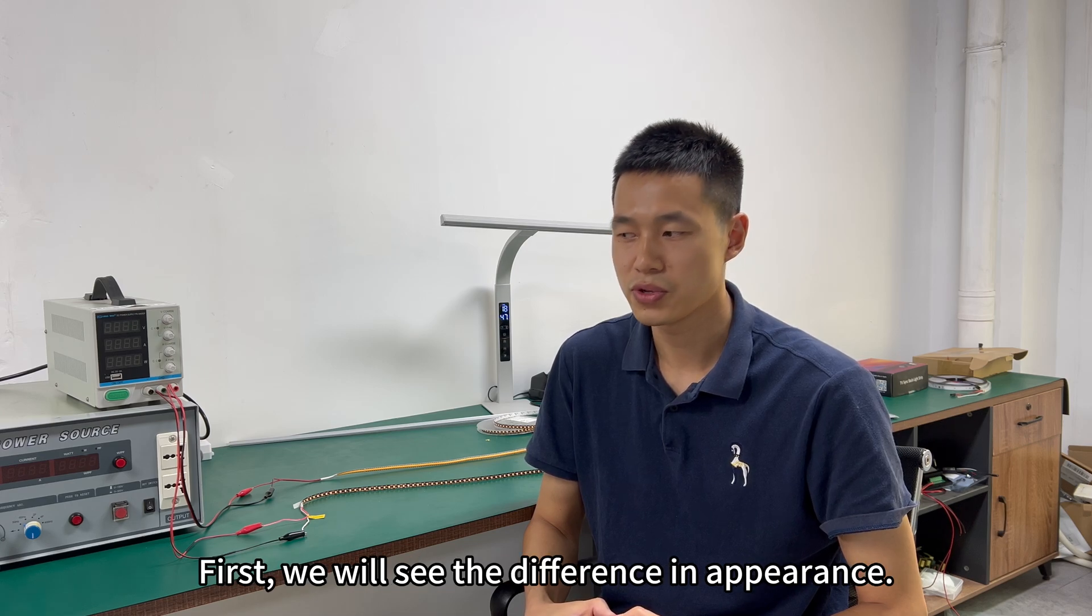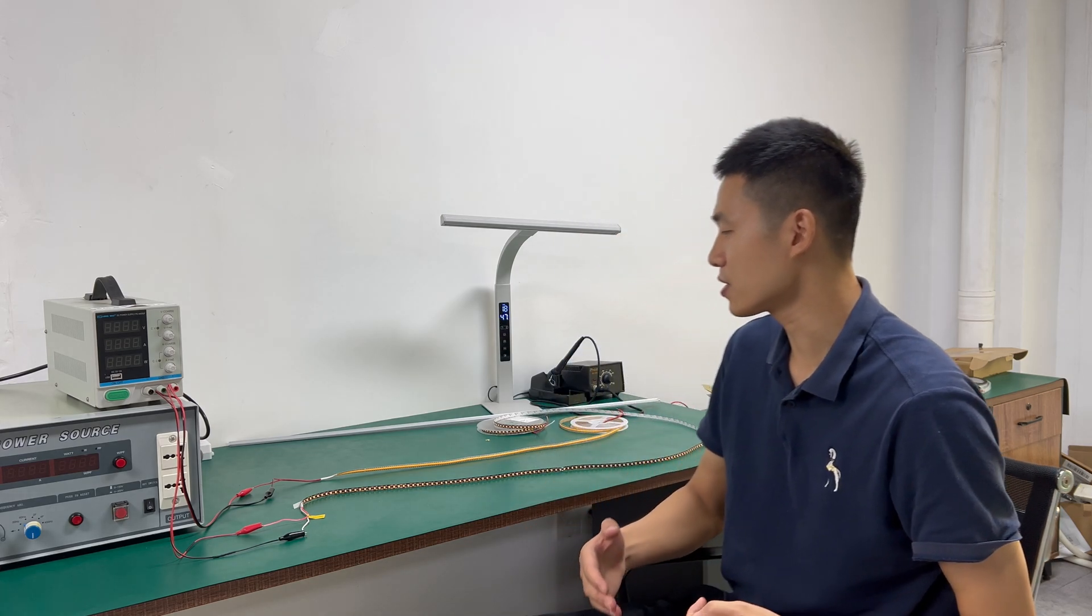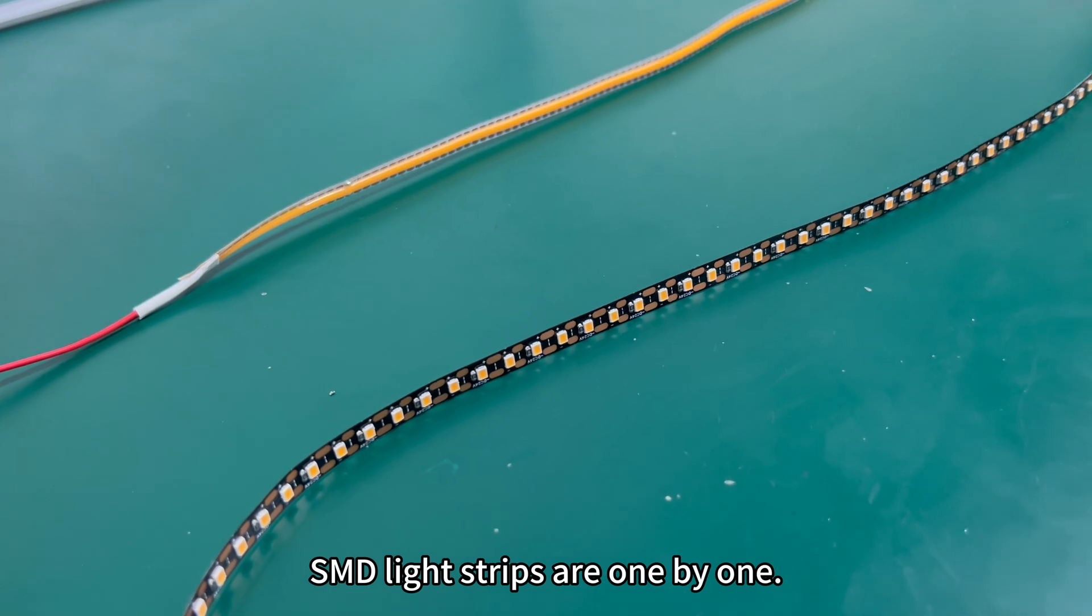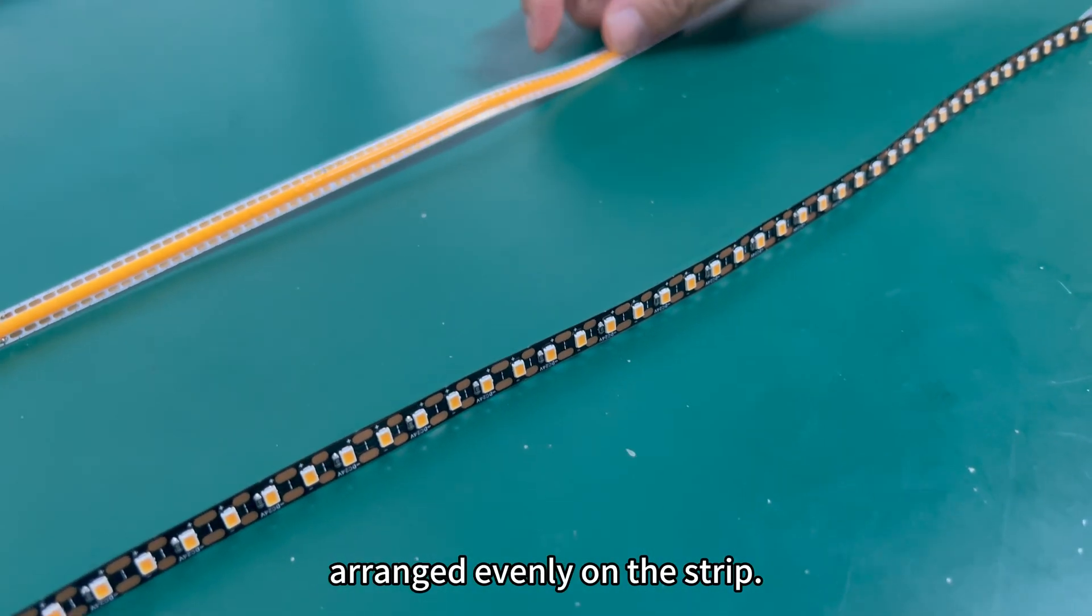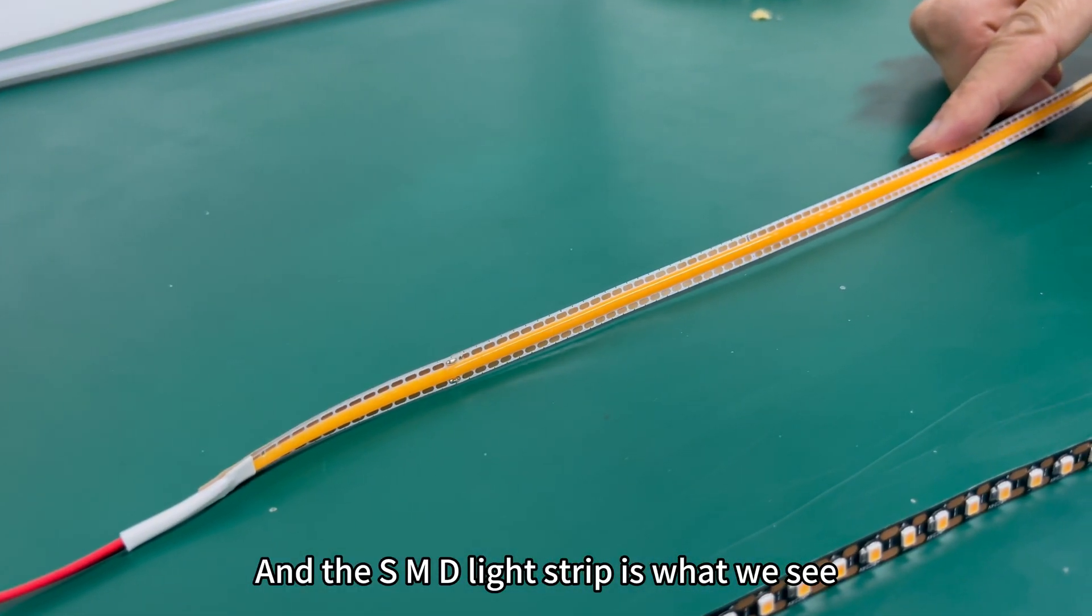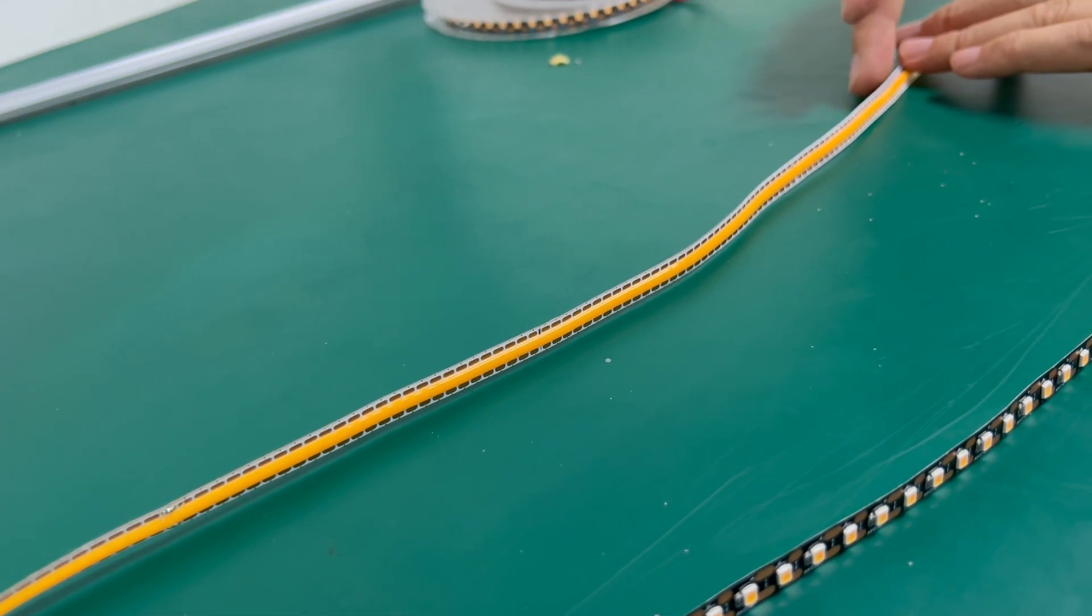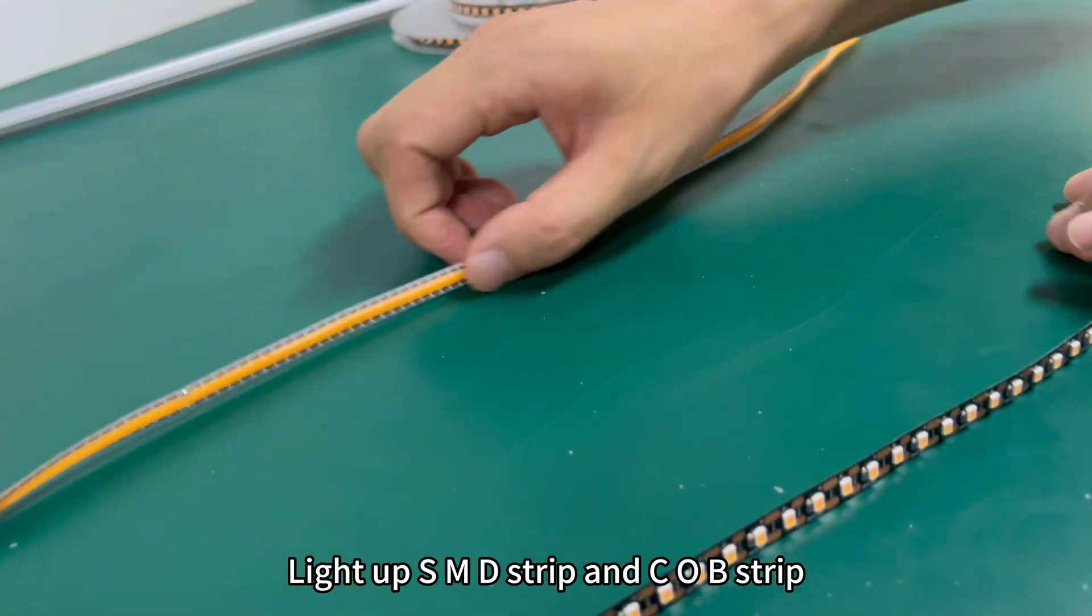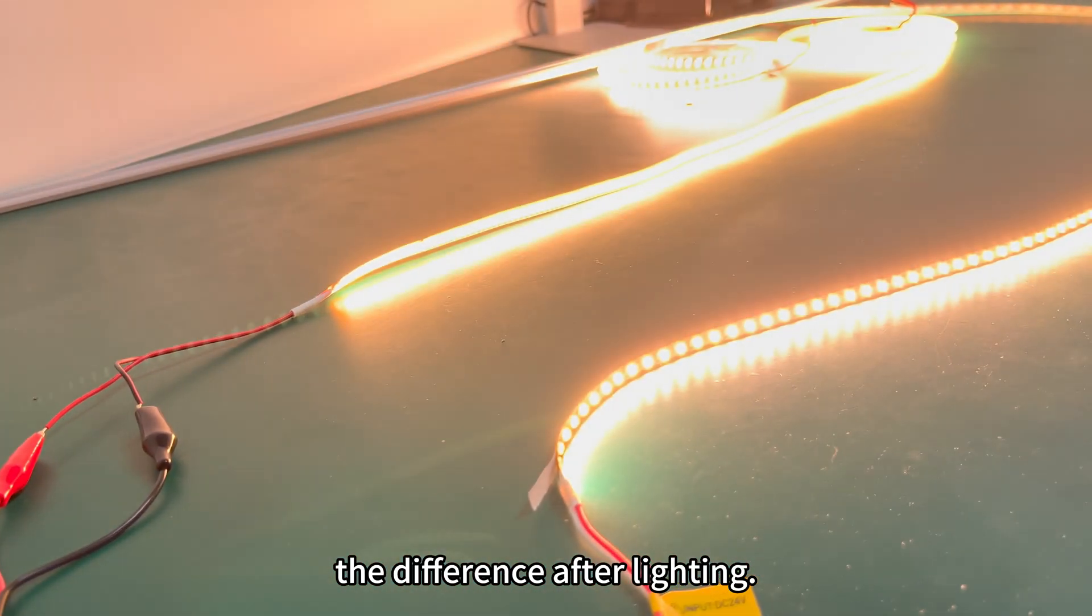First, we will see the difference in appearance. We can see SMD light strips are one by one lamp beads arranged evenly on the strip. And the SMD light strip is what we see, usually one of this yellow. And now we look at lighting up SMD strip and COB strip, the difference after lighting.